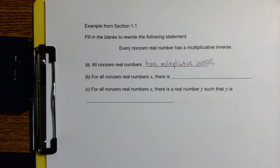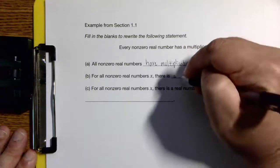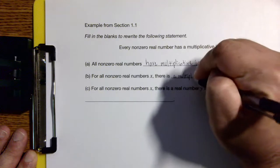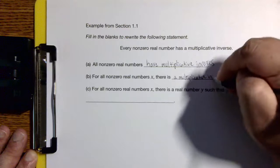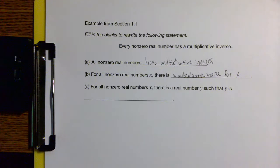Part B says: 'For all non-zero real numbers X, there is blank.' In part A we didn't see a variable, but in part B we do — they introduce the variable X. Now, if we're going through the trouble of introducing a variable, we better use that variable. So if we filled in the blank without using X, the natural question would be: why did we bother to call it X if we weren't going to use it? So here we could say 'there is a multiplicative inverse for X.'